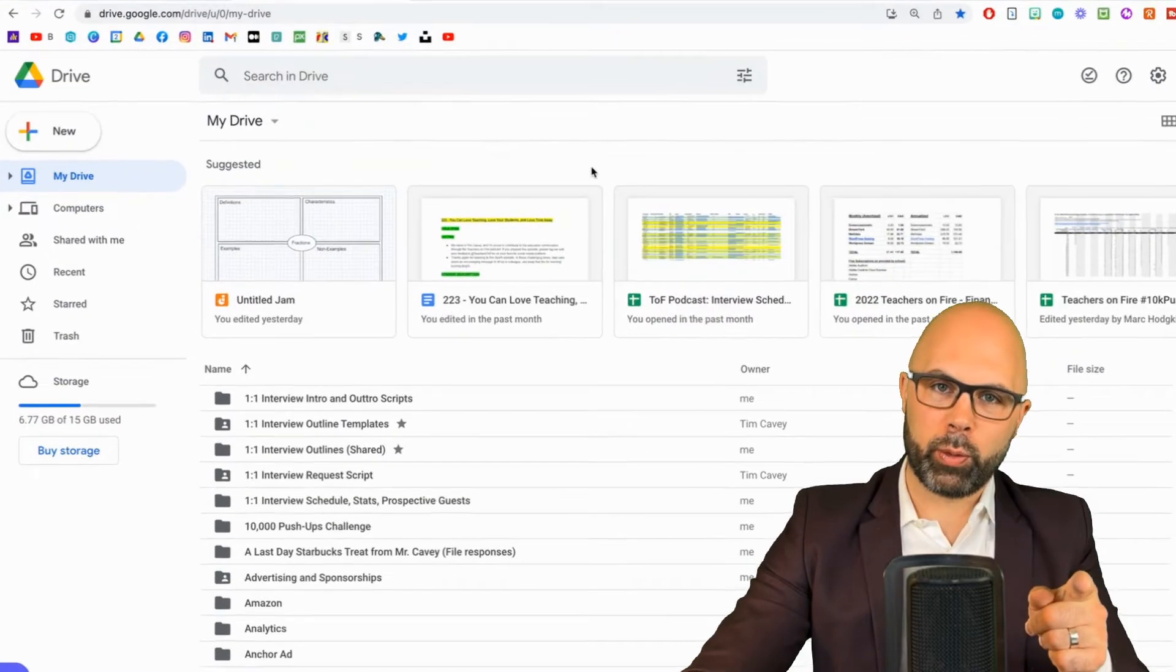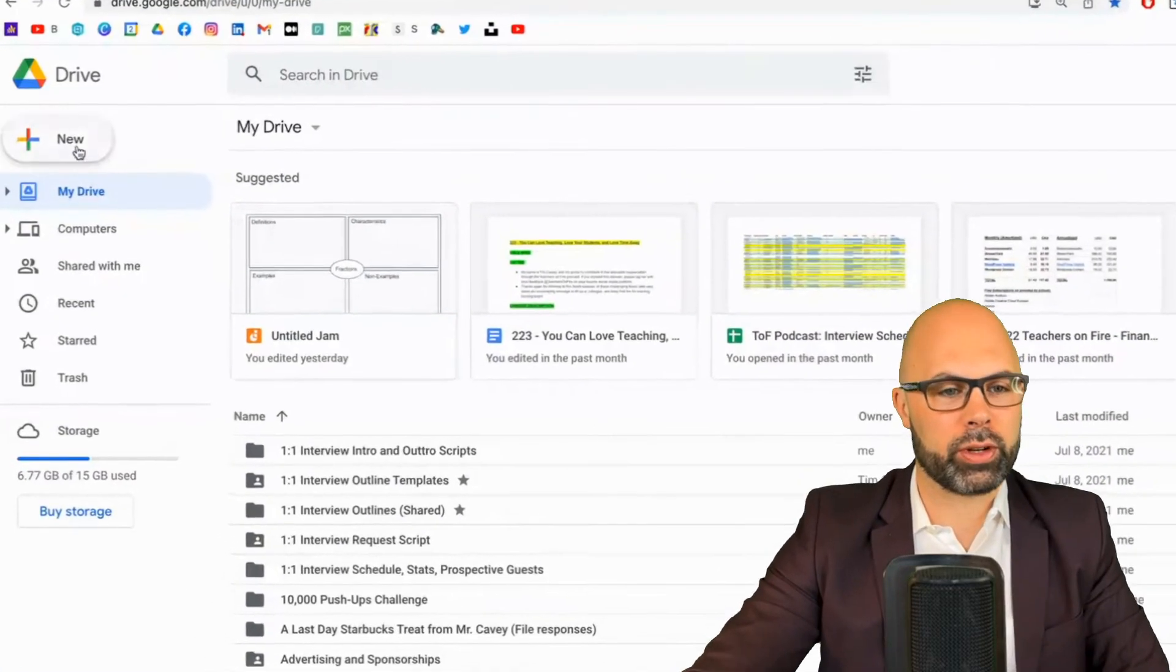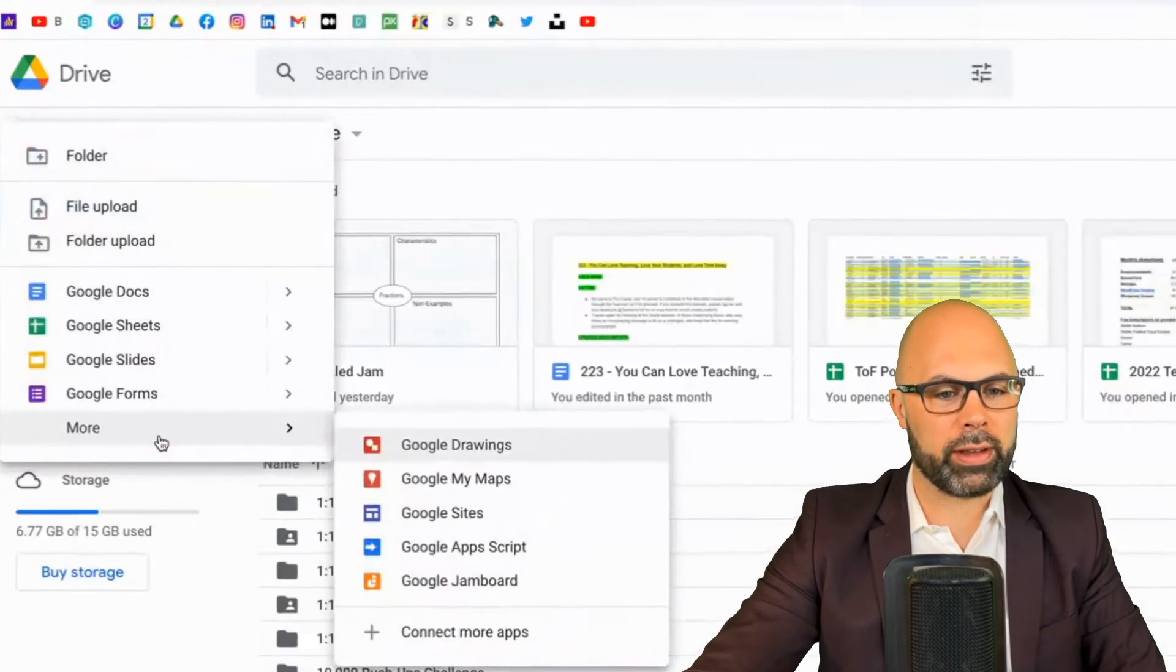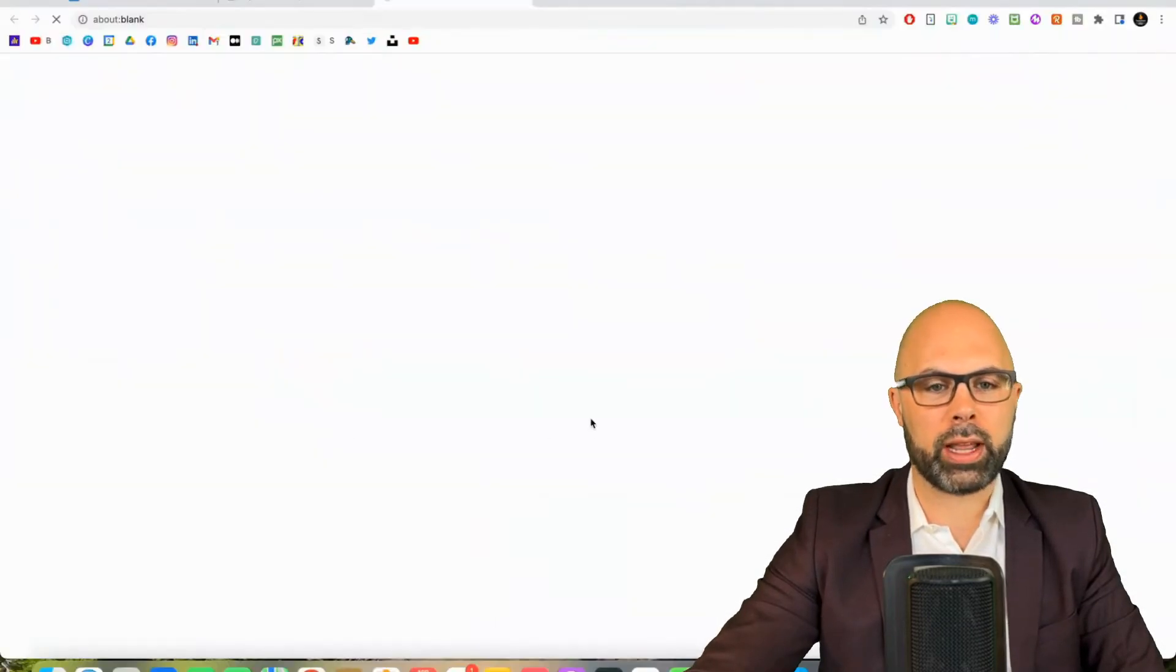The first thing we want to do is open a Jamboard. So to do that we're going to go into our Google Drive, hit new and then find Jamboard and open it up.